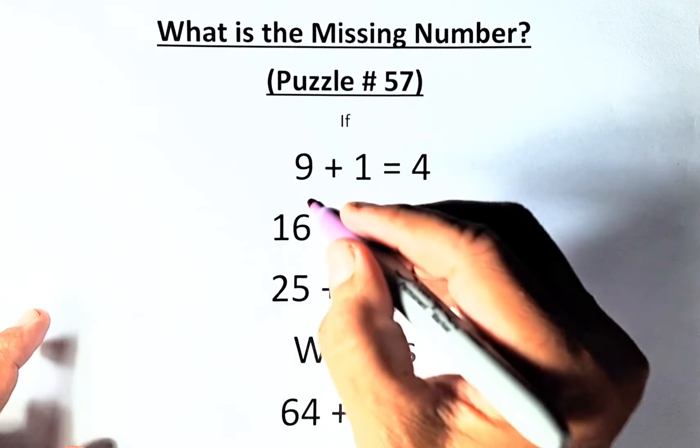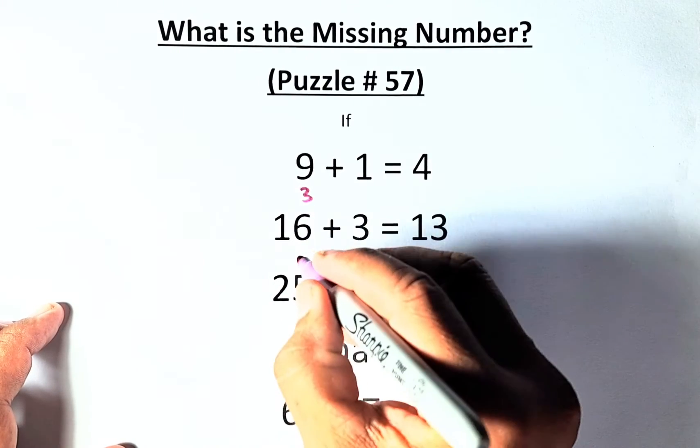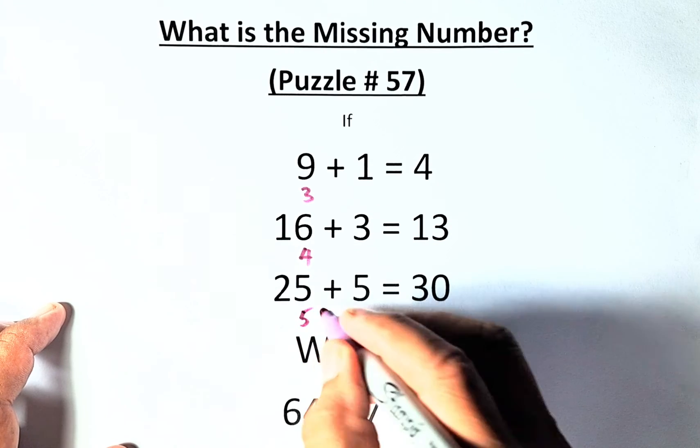So to square root 9, you get 3. To square root 16, you get 4, and square root 25 is 5.